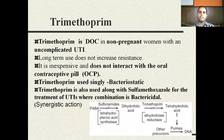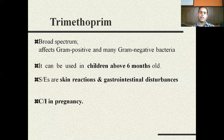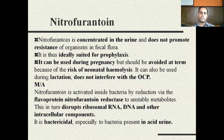Trimethoprim works by inhibiting the enzyme dihydrofolate reductase, thereby inhibiting the conversion of dihydrofolic acid to tetrahydrofolic acid and blocking the conversion of PABA into DNA. It is a broad-spectrum drug that affects both gram-positive and many gram-negative bacteria. It can be used in children above six months of age. Side effects include skin reactions and gastrointestinal disturbances. However, it is contraindicated in pregnancy.